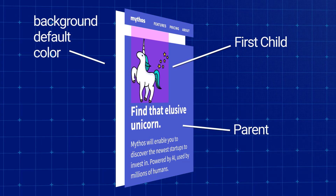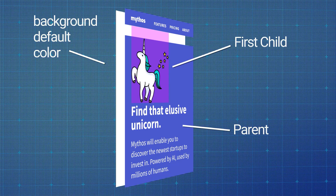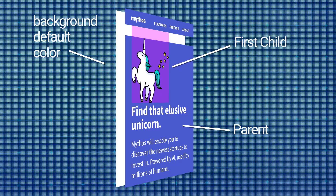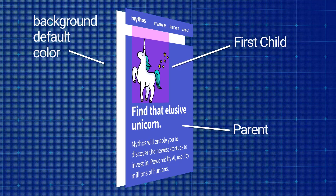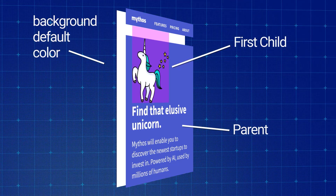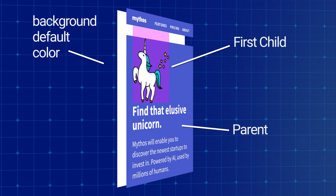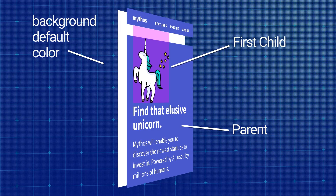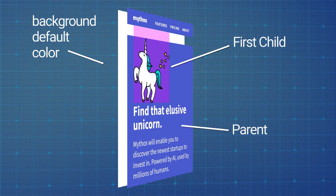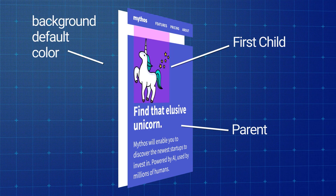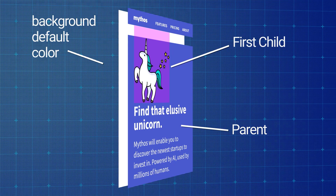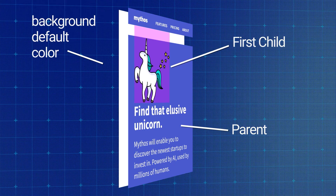This will cause issues if you've set a background color on the parent, because the space created by the child's top margin extends outside the parent, so it often ends up defaulting to whatever background color you have on your body tag.